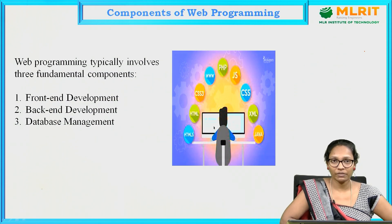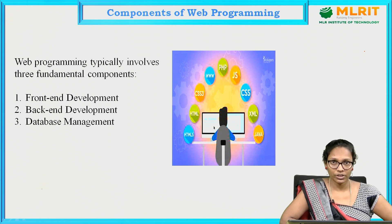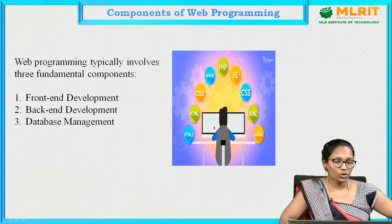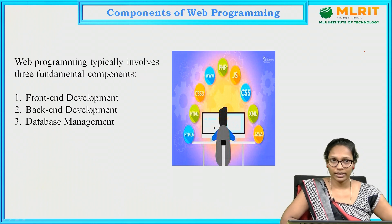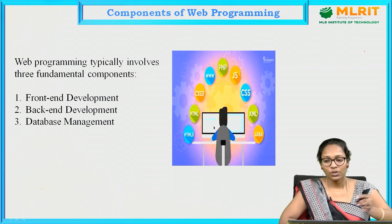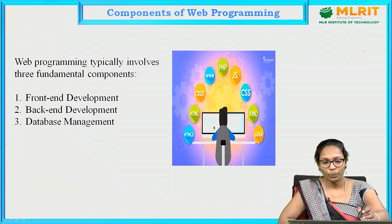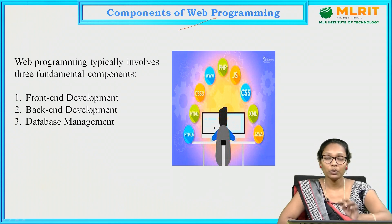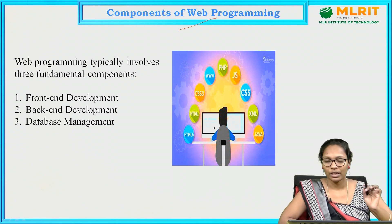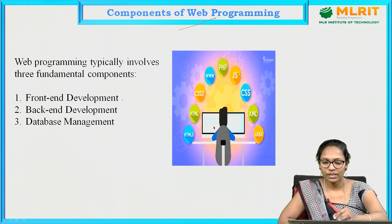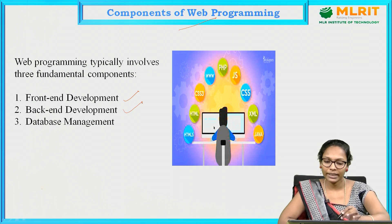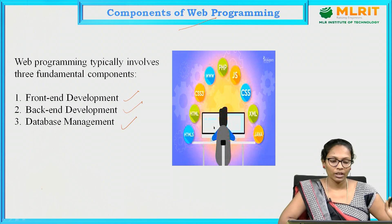For this purpose we use different languages and technologies. Based on those languages and technologies, the components of web programming are divided into three types: front end development, back end development, and database management.